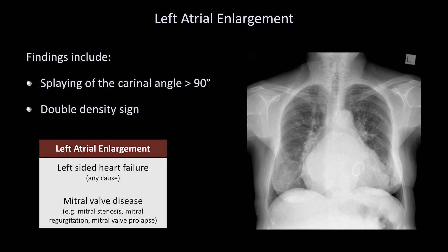For this particular x-ray, there is a clue as to why this patient has a large left atrium. While the overall size of the heart is enlarged, suggesting heart failure, assuming this is a PA film, there is another important finding: a round structure here, which is the ring of a mitral valve replacement. So this patient has had some form of mitral valve disease that at least contributed to the enlarged left atrium.